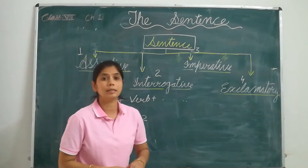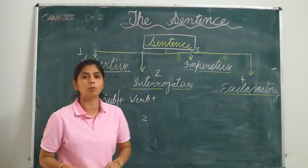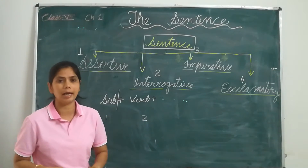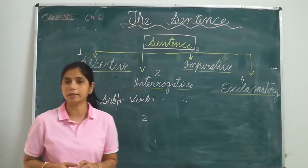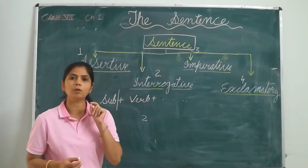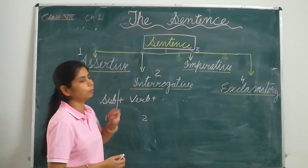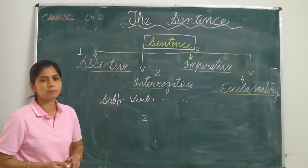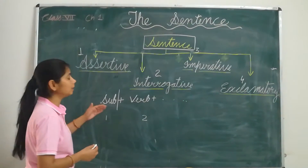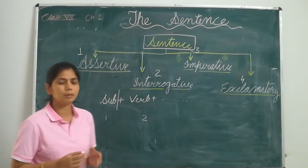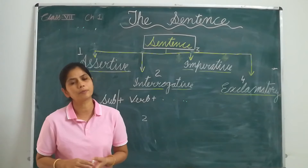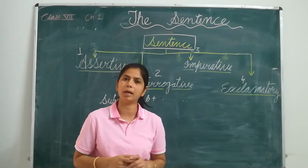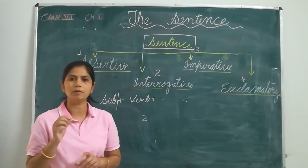In a sentence, the verb is the most important or essential element in the predicate part. If there is no verb in the predicate part, we cannot call it a sentence. So the most important or essential element for a sentence is a verb. In assertive sentences, normally the subject comes before the verb, but in some sentences the subject can come after the predicate. An assertive sentence always ends with a full stop.